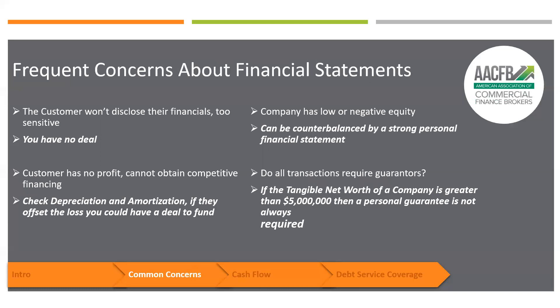You look at the tangible net worth as opposed to the net worth of the company. Sometimes there is something called goodwill listed in the assets section, and also something called intangibles. Those are minused out. Tangible net worth is their net worth minus intangibles and goodwill.